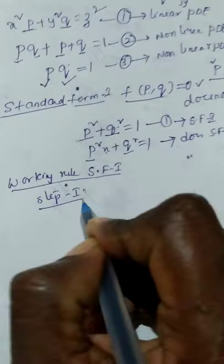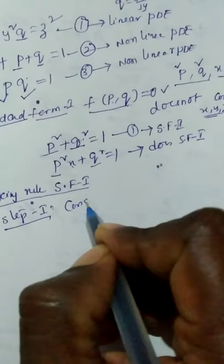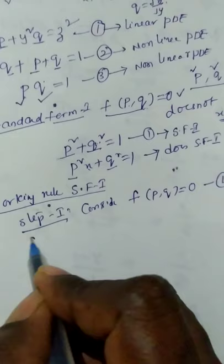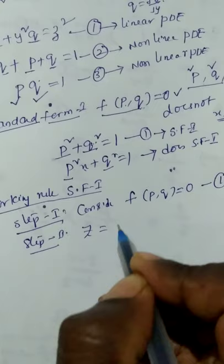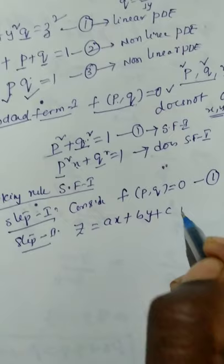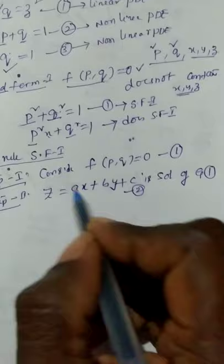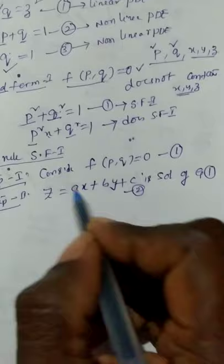Working rule to solve partial differential equations belonging to Standard Form 1. Step 1: Consider the given partial differential equation f(p, q) = 0 as equation 1. Step 2: Directly take z = ax + by + c as equation 2, which is the solution of equation 1. This means equation 2 must satisfy equation 1.